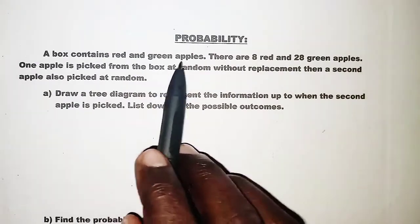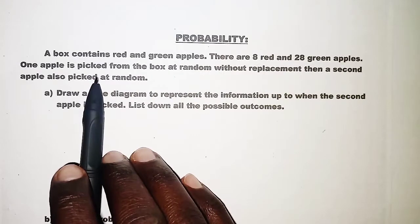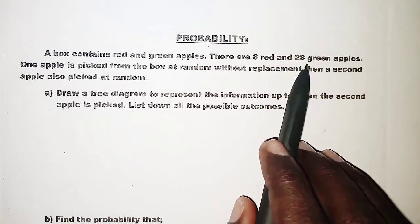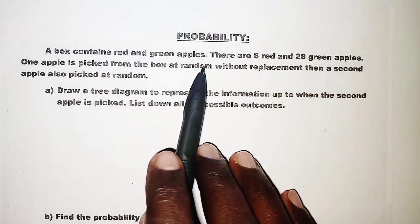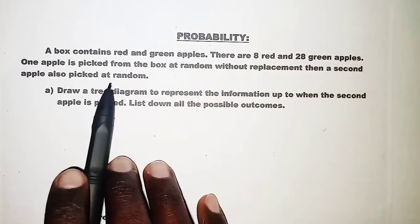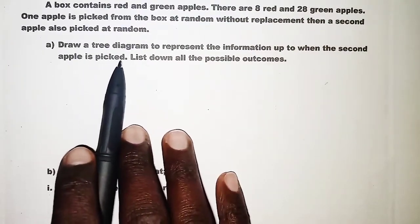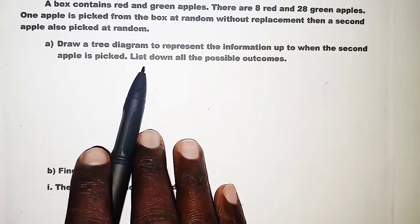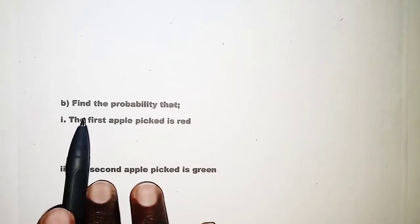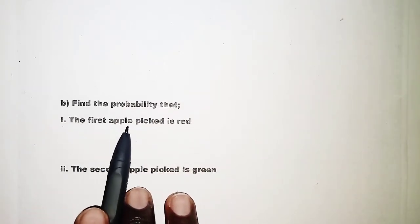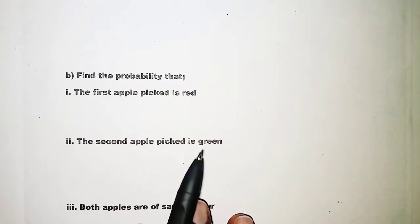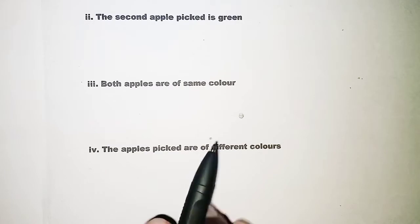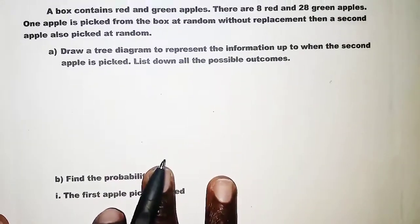Welcome. The topic today is probability. The question reads: a box contains red and green apples — there are eight red and 28 green apples. One apple is picked from the box at random without replacement, then a second apple is also picked at random. Part A: draw a tree diagram to represent the information up to when the second apple is picked and list all the possible outcomes. Part B: find the probability that the first apple picked is red, then the second apple picked is green, then both apples are of the same color, and finally the apples picked are of different colors. We will begin with the first part.